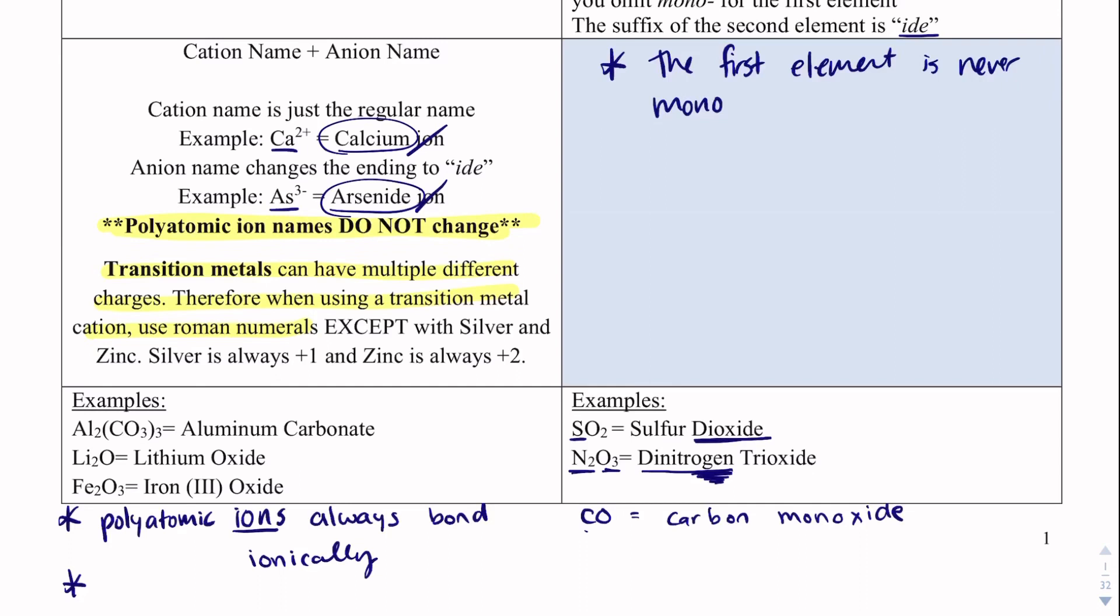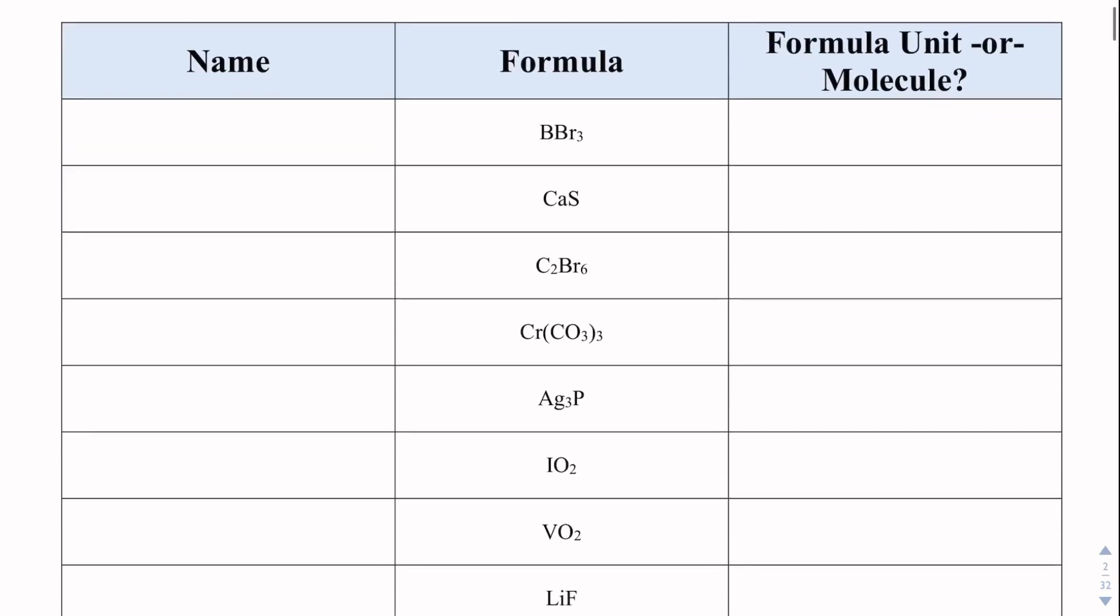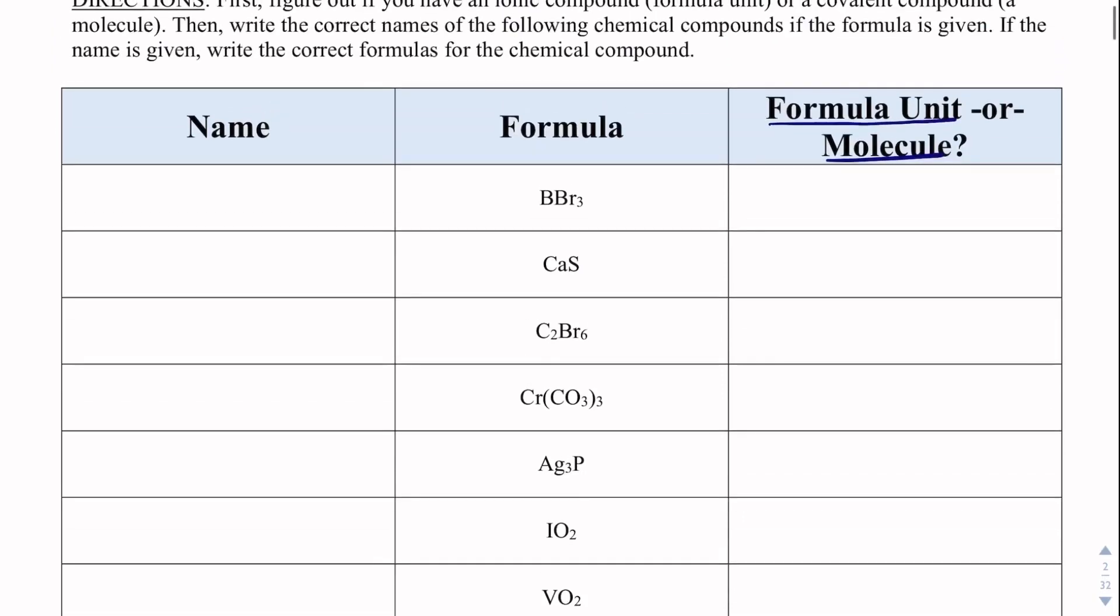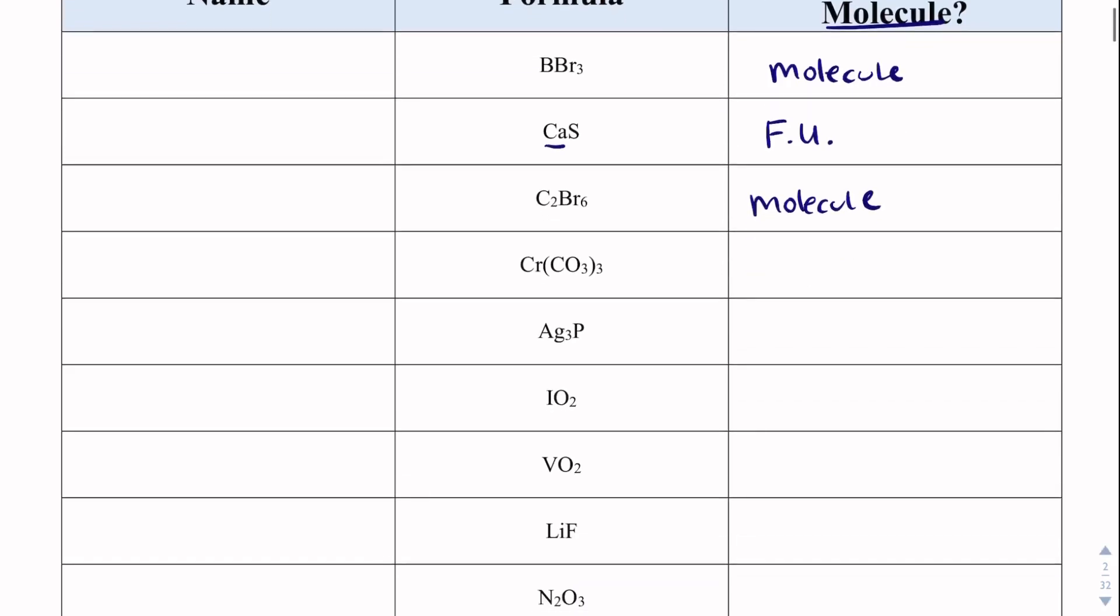On Schoology, you have a somewhat lengthy practice quiz on this, and I'm going to show you how I would do this first. What we want to do is we want to first label if something's a formula unit or a molecule. A good clue if it's a formula unit is if we have a metal. So, boron and bromine, both are not metal, so this will be a molecule. Calcium, that is a metal, so this will be a formula unit. Carbon is not a metal, so this is going to be a molecule. Chromium is a metal, so this will be a formula unit. So I'm not worried about naming it. I'm going to first label it as molecule or formula unit, and then I will focus on getting the formula or naming it.